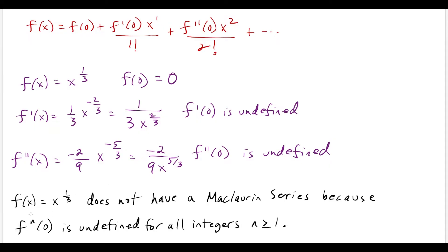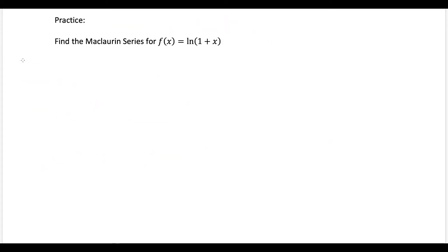So once again, when we look at the general formula for a McLaurin series, the nth derivative at 0 is going to be undefined for all integers n greater than or equal to 1 — the first, second, third, and so on derivatives are all undefined at 0. Now we'll look at an example where the pattern is a little bit tricky to spot.